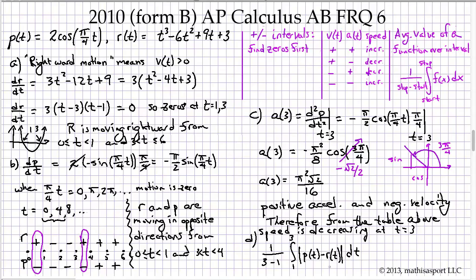So it's just P(t) minus R(t). Again, part D is really just a decoding exercise. Do you understand what distance is? Do you understand what the average value of a function over an interval is?